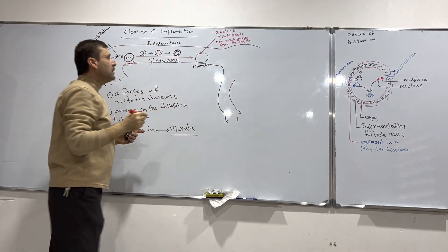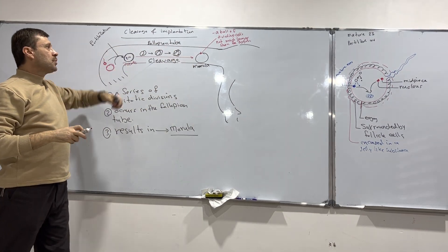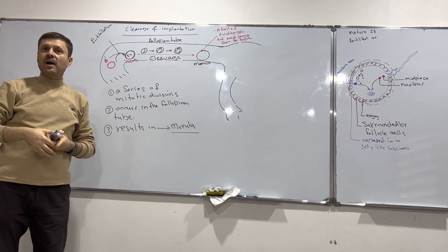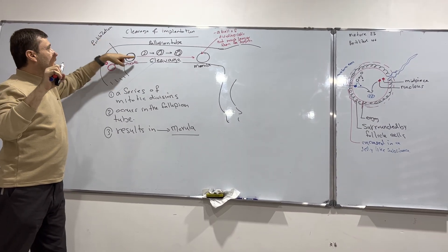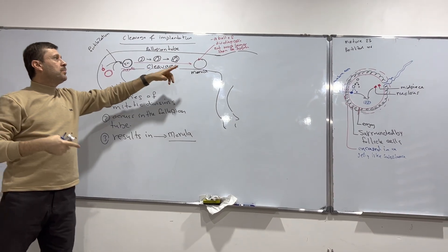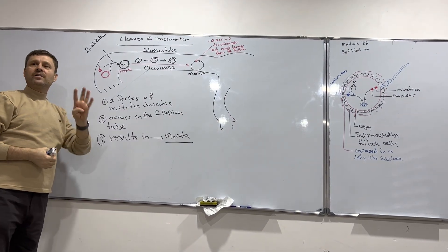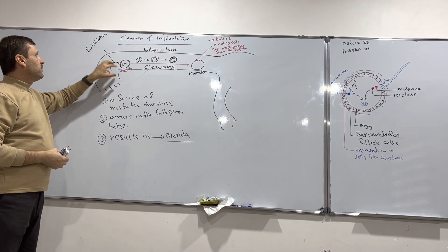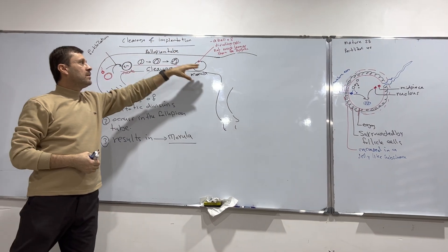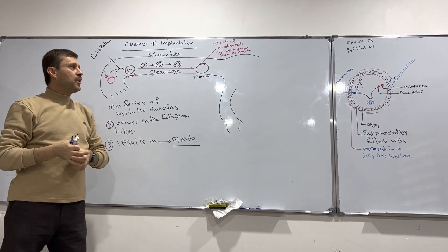The morula still remains within the fallopian tube. So we have four things that occur within the fallopian tube: fertilization, production of the zygote, cleavage, and production of the morula.